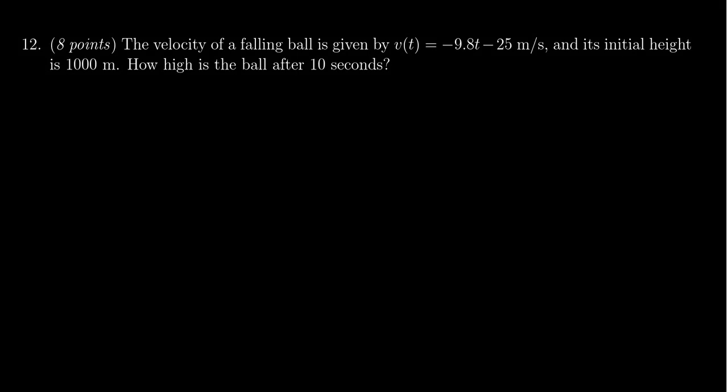In this video we provide the solution to question number 12 for practice exam number 4 for Math 1210. We're given the velocity function of a falling ball as v(t) = -9.8t - 25 meters per second, and we're also given the initial height of the ball as 1000 meters. So how high is the ball after 10 seconds?